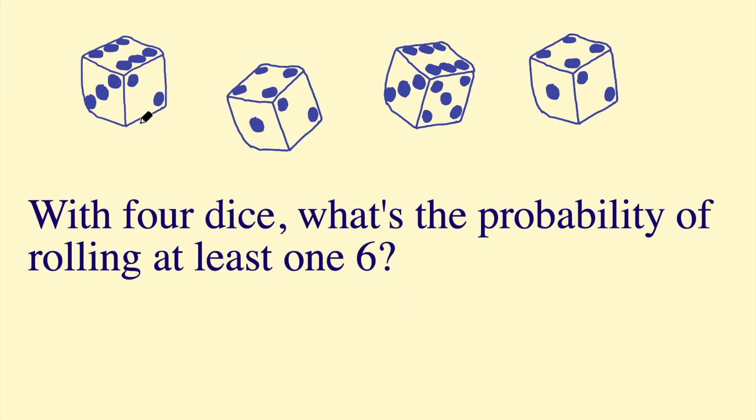Again, we're going to start with considering the total possible outcomes. So all of the outcomes of rolling four dice will be 6 × 6 × 6 × 6. So possible outcomes equals 6^4, which is 1,296.